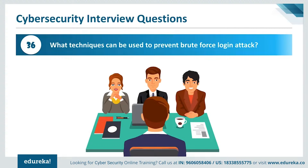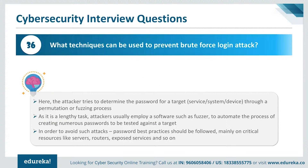Question 36: what techniques can we use to prevent brute force login attacks? The attacker tries to determine the password for a target through a permutation or fuzzing process. Since it is a lengthy task, attackers usually employ software such as a fuzzer to automate the process of creating numerous passwords to be tested against the target. To avoid such attacks, password best practices should be followed, mainly on critical resources like servers, routers, exposed services, and so on.